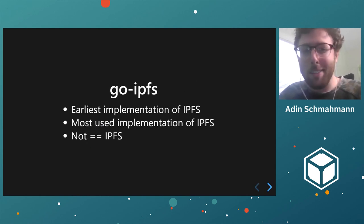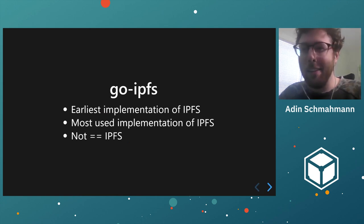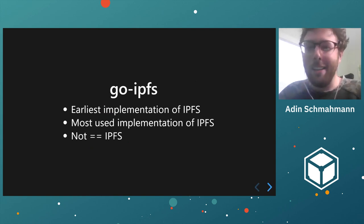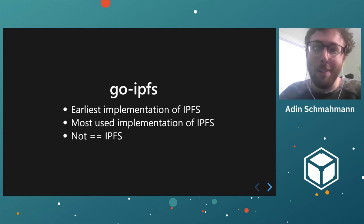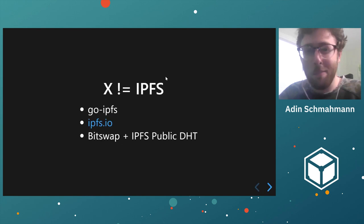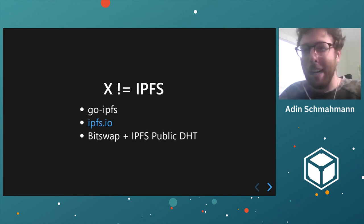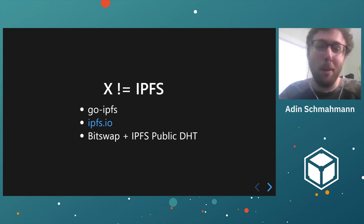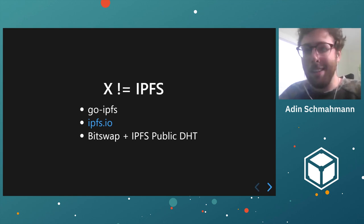A little bit about Go IPFS. It's the earliest implementation of IPFS — I think the first commit was in about 2014. It is the most used implementation of IPFS, and importantly, it is not exactly equal to what IPFS, the protocol, is. Other things that are not IPFS include IPFS.io or its sibling dweb.link, things that support Bitswap and the IPFS public DHT, things that only support Bitswap, things that support TCP. These are things that are not exactly equal to IPFS.